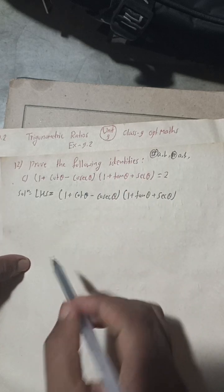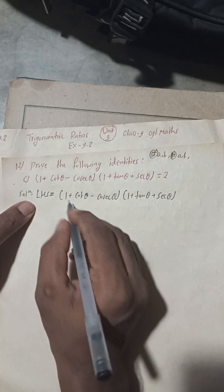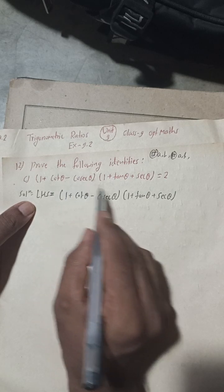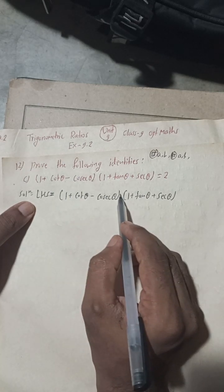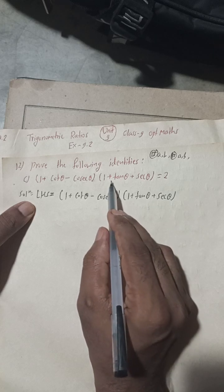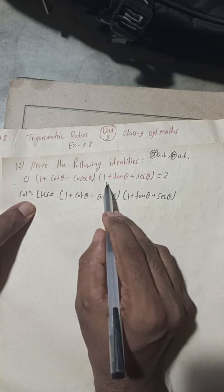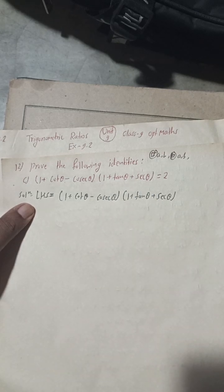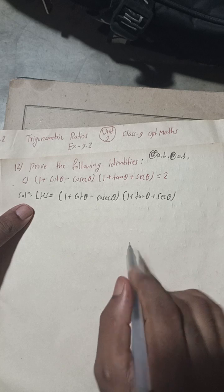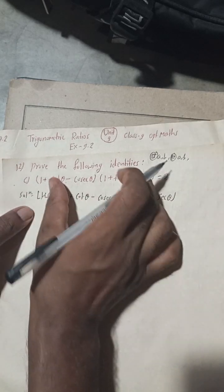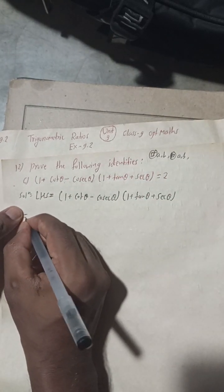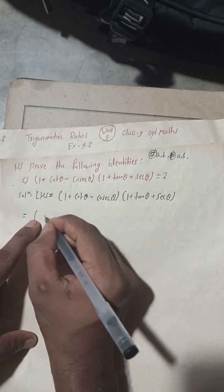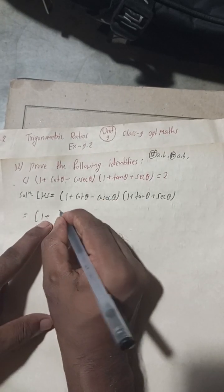The LHS is: (1 + cot θ − cosec θ) × (1 + tan θ + sec θ) = 2. We have to prove this. I have already taken the LHS on the other side.